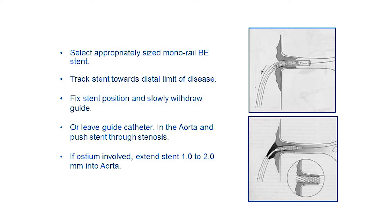Renal artery stenting is a very effective way of treating this condition, and successful stenting quite often results in significant improvement in blood pressure control in patients presenting with renal vascular hypertension. Not infrequently, there is not just a reduction in the number or dose of medications, but quite often those medications can be ceased completely.